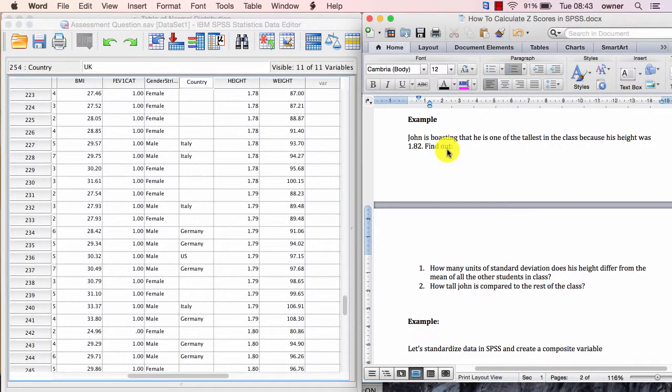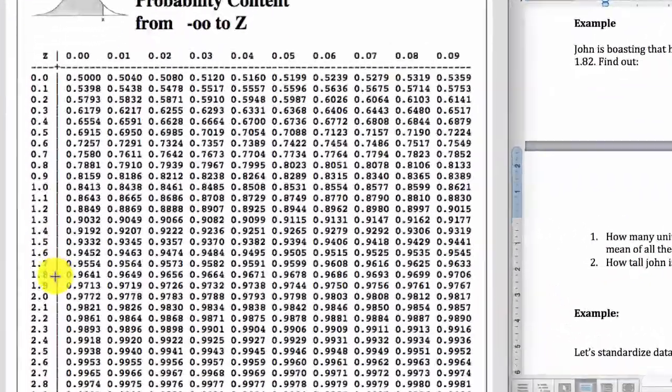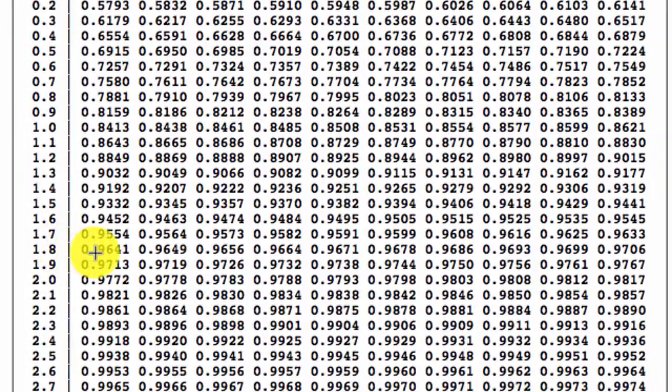By knowing the Z score now, which is 1.8, we can easily calculate how tall John is compared to the rest of the class. We can't find out that information without knowing the Z value, which is one of the significance of the Z value. Now, if we go to the table of normal distribution and find 1.8, we would see that John is taller than 96% of the class.